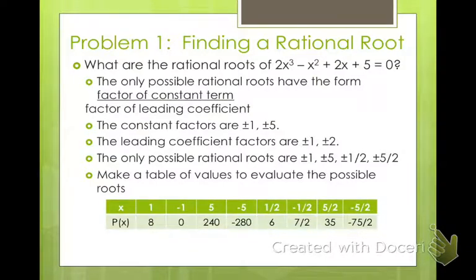When you plug each one in, when you plug in 1, 1 cubed is 1 times 2 minus 1 plus 2 plus 5, you get 8. When you plug in negative 1, you get 0. When you plug in 5, you get 240. So our only real root is negative 1 because that's the only one that equals 0.